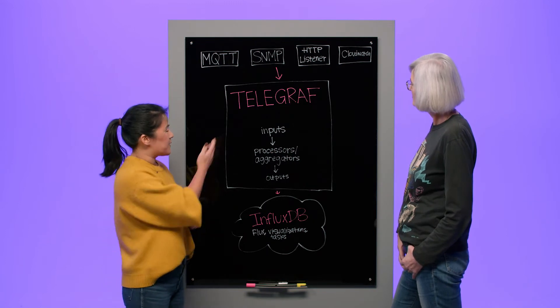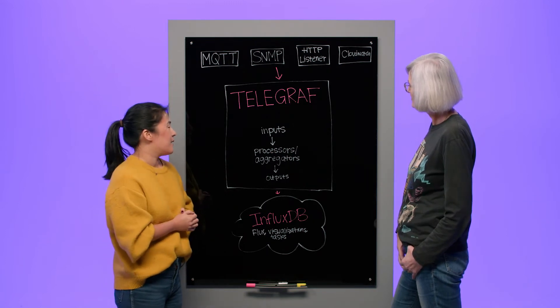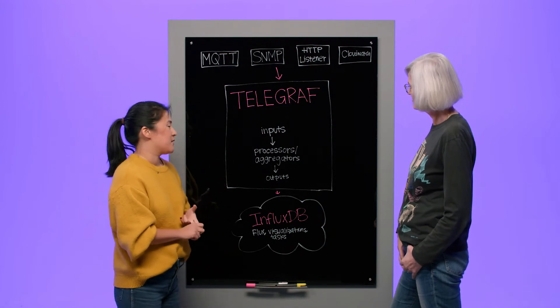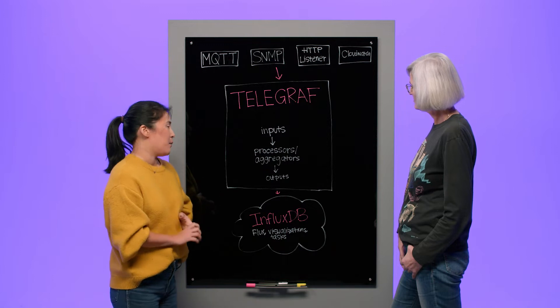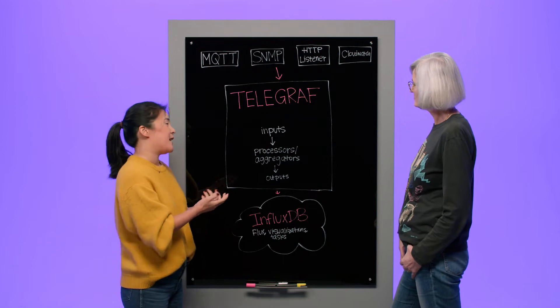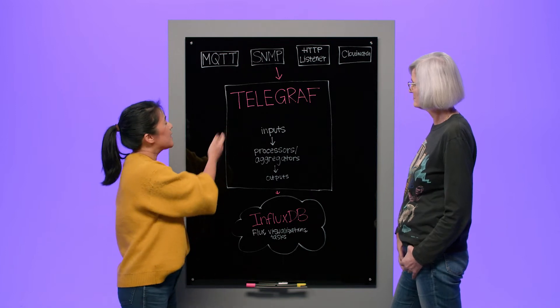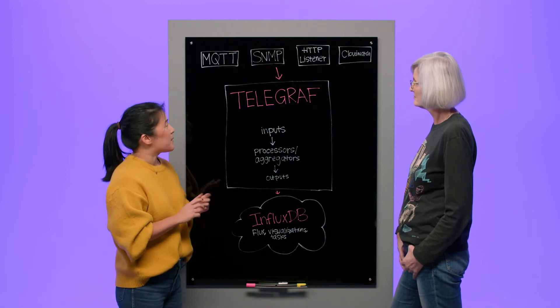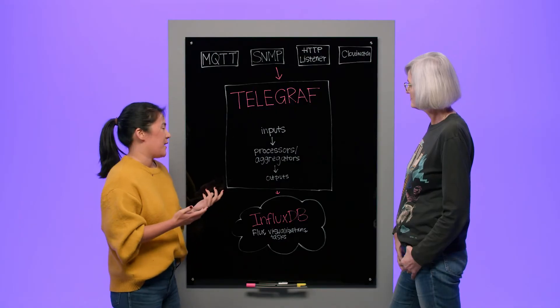As I mentioned, Telegraf is a plugin-based system. It contains four types of plugins: input plugins, processors and aggregators, and output plugins. Telegraf has hundreds of input plugins that read data directly from the source, such as really common IoT plugins like MQTT, Modbus, and OPC UA, as well as networking plugins such as SNMP and GNMI, and cloud plugins as well — CloudWatch, Google PubSub, and Azure Event Hubs.